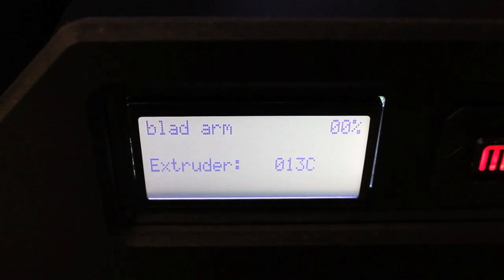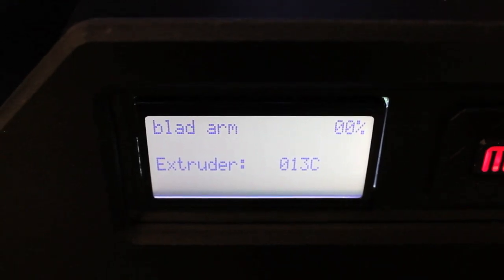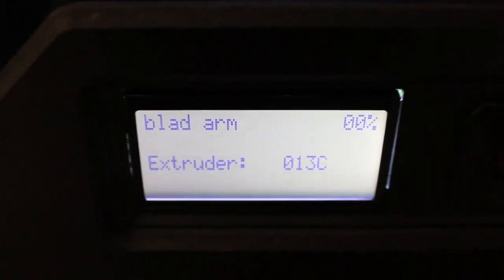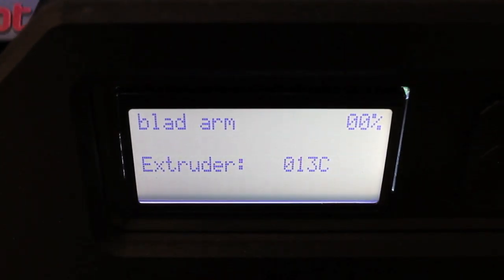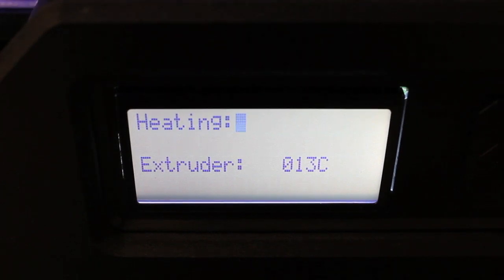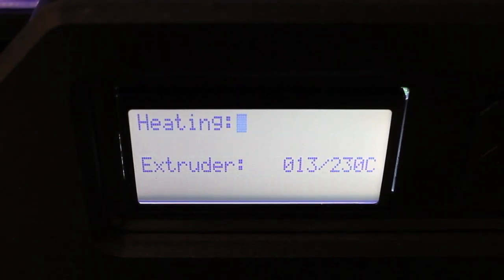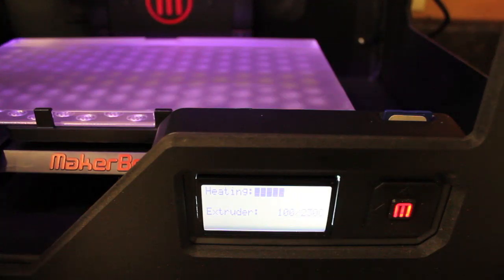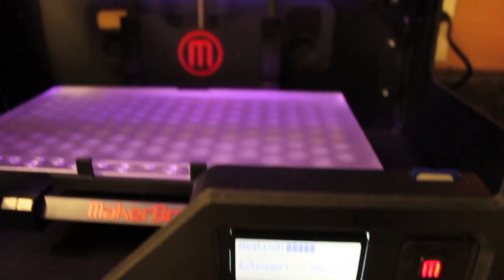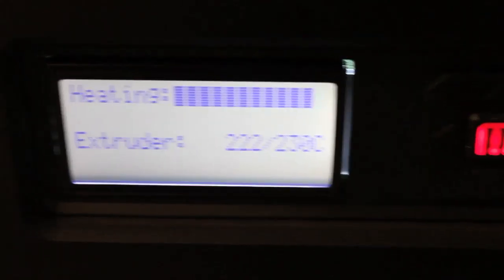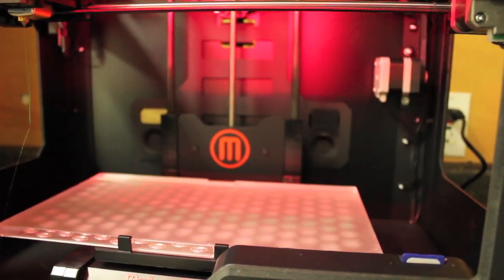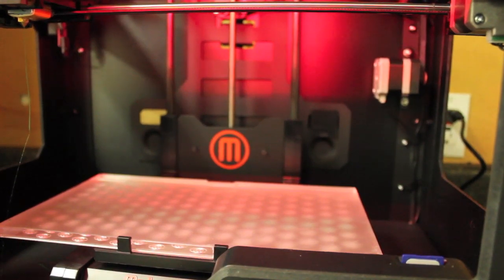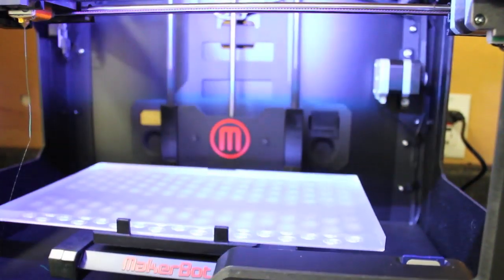Now what you're hearing is the build platform loading, and we're going to get a progress of the extruder. The extruder needs to be able to heat up before the printing can begin. So we're at 100 degrees Celsius of 230. We're at 220 of 230. Getting real close to the ideal temperature. And here shortly we should see the build platform lift up. And here we go.